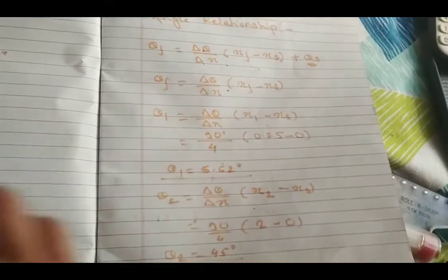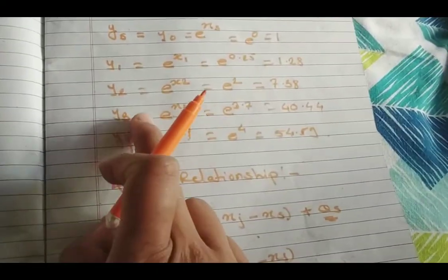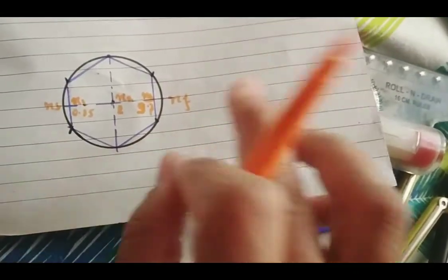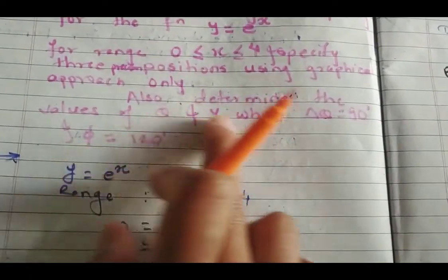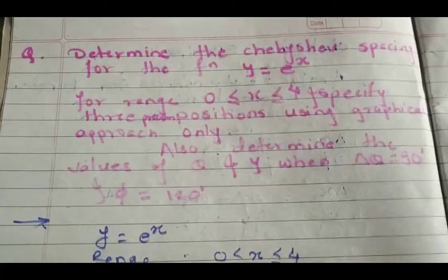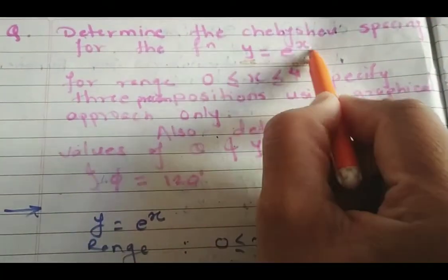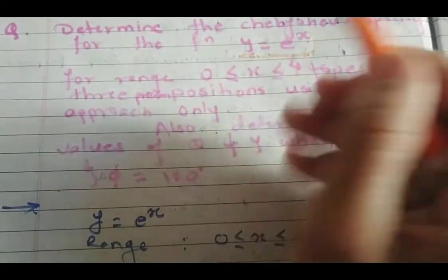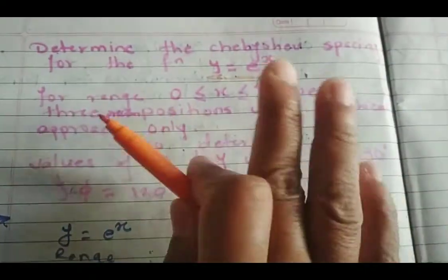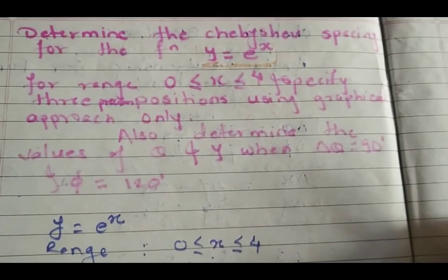We calculated all values of Y and all values of X for finding precision positions. Here we have done all the calculations. In this way, you can solve any kind of numerical problem on Chebyshev spacing. Thank you for watching the video.